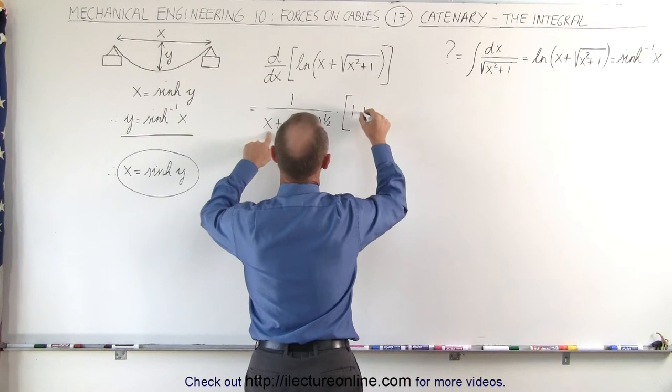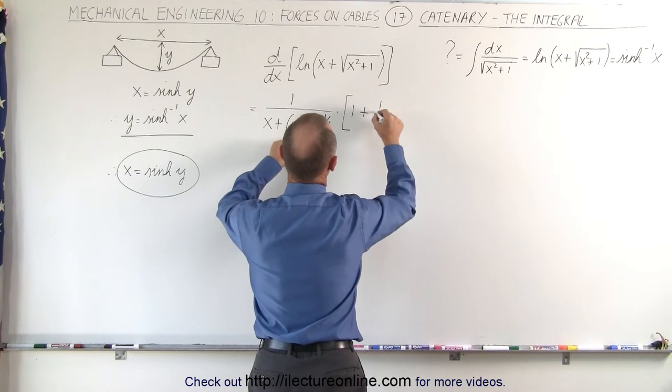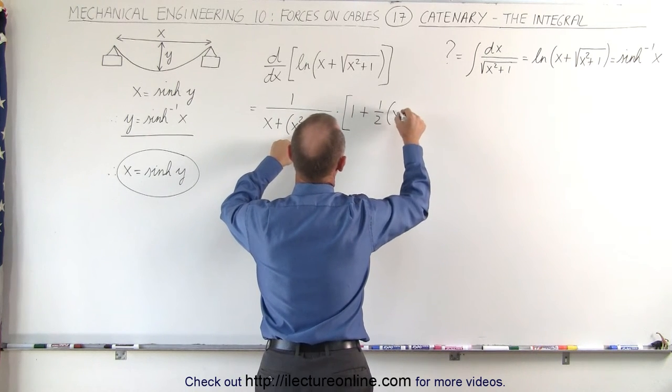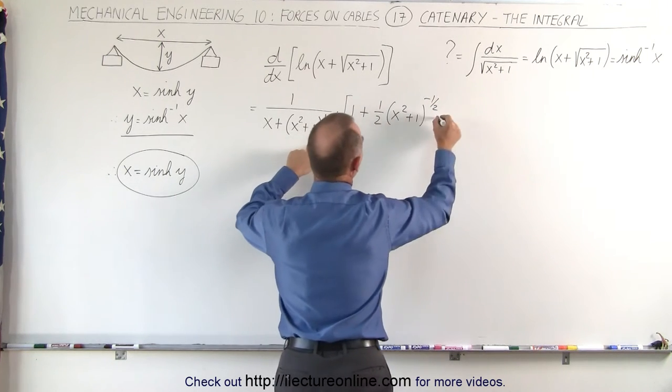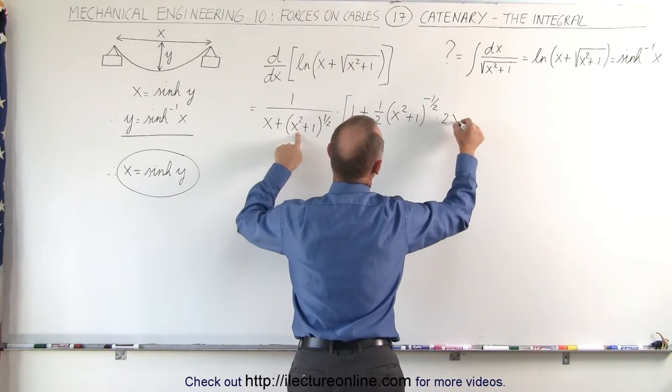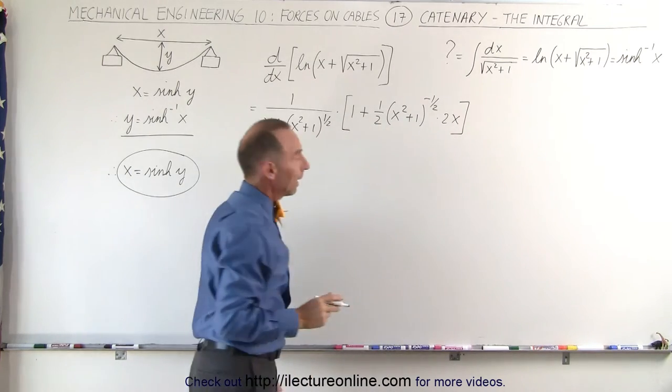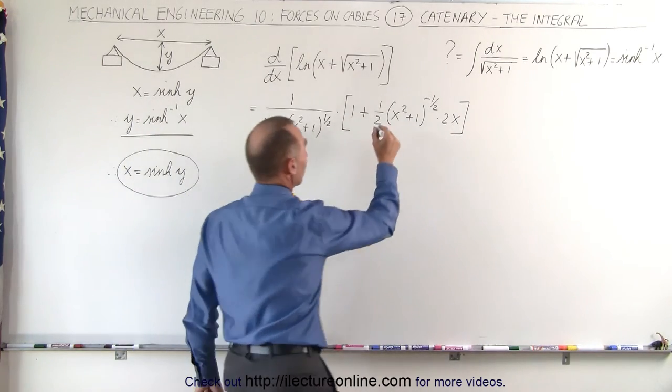The derivative here would be 1 plus, derivative of this would be 1/2, times x squared plus 1 to the minus 1/2 power, subtract 1 from the exponent, times the derivative of what's inside, which is 2x. And now right away we can see here that the 2's cancel out.